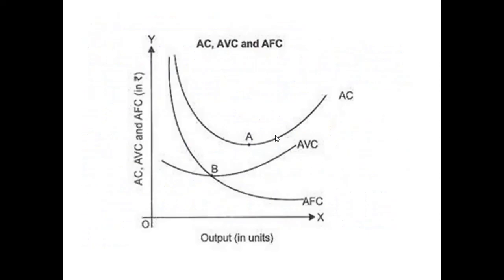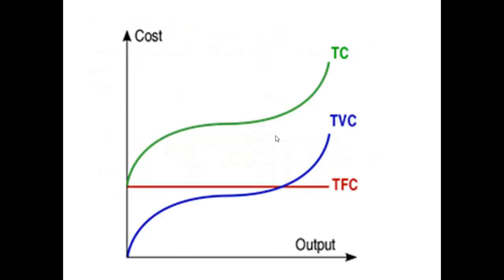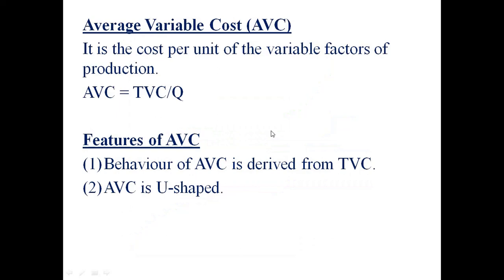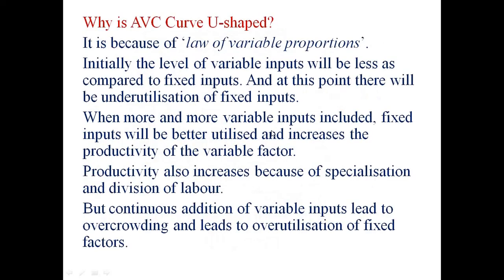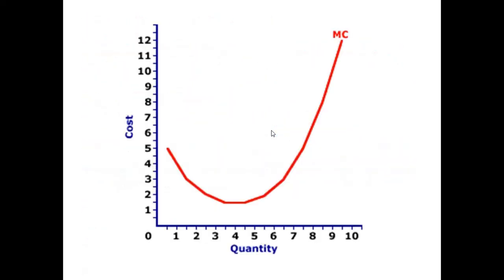Let me show you with the TC curve. Change in total cost by change in quantity represents the slope of the total cost — the slope of this green line. You can find MC at a certain output by taking the corresponding level of output on the TC curve — whether the output is here, or here, or at any point on the TC curve.